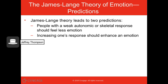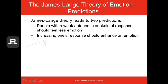If the James-Lange theory were true — that the experience in the body leads to the emotional response — then that would mean two things: one, that people with weak nervous system responses should feel less emotions, and two, if you're able to increase the amount of somebody's bodily response, you should be able to enhance the experience of the emotion.